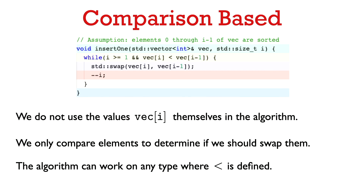Let me also say briefly something about comparison-based sorting algorithms. Here we have the main subroutine in insertion sort, the insert1 function. You can see in this function that we don't use the value vec[i] itself — we only reference it when comparing it with other elements. The advantage of such an algorithm is that it can work whenever a comparison function on the elements is defined. It doesn't matter if you have a vector of integers, strings, or your own user-defined class. As long as you have a comparison function defined on the elements, you can use this algorithm. The C++ standard sort function is also a comparison-based sorting algorithm, so to use that function, all you need is a comparison function defined on your elements.